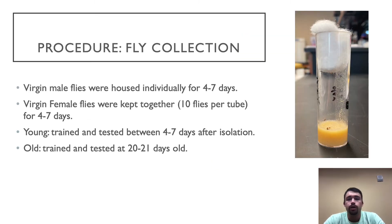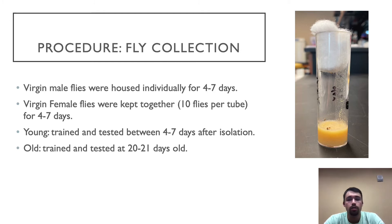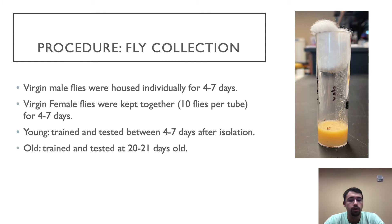When collecting the flies, we had to check every day from individual stocks to make sure we were collecting virgin flies. We knew we were collecting virgin flies due to the color of their exoskeleton, which indicates the relative time frame that the fly hatched. Every virgin male fly was collected and kept individually away from all other flies and labeled the day it was collected. All female flies were collected and kept in approximate groups of ten and labeled with the date they were collected as well. Both male and female flies were stored for approximately four to seven days to allow for maturing before being used in our fly courtship assay. For older flies, they were kept isolated for 20 to 21 days for training and testing.